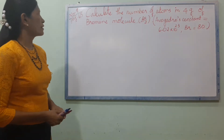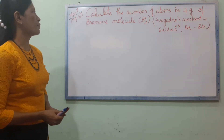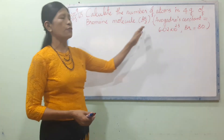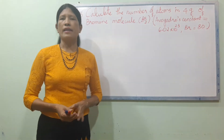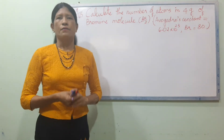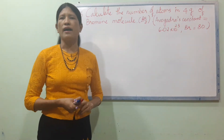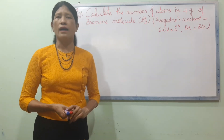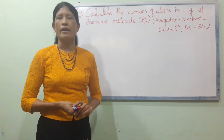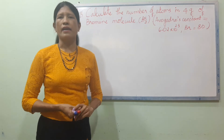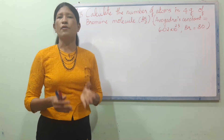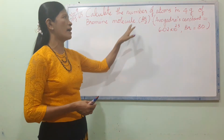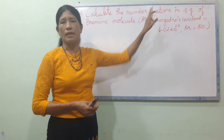Here are the number of atoms in 4 grams of bromine molecule. This means that 4 grams of bromine molecule. We have the number of molecules to 1.2.